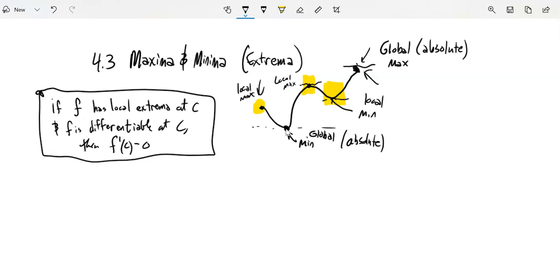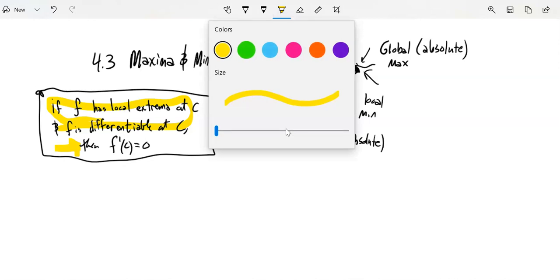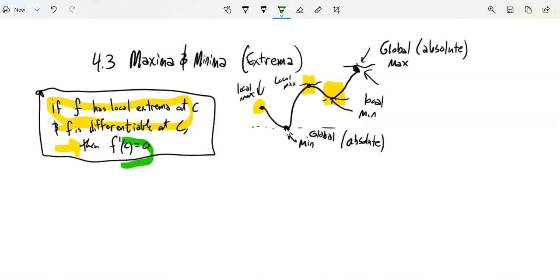Now, notice this is a one way implication. And what I mean by that is if all this stuff is true, then this is true. I'm not claiming that it goes the other direction. I'm not saying if the derivative is zero, then it is necessarily a local extrema. That's a different statement. This is a one way statement. This is just saying if there is an extrema, it's differentiable at that point, then the derivative at that point is zero.